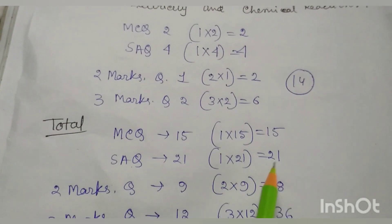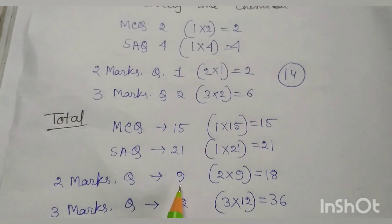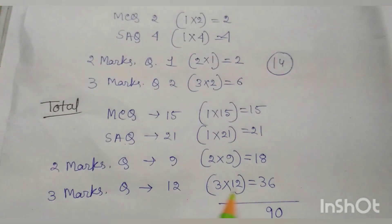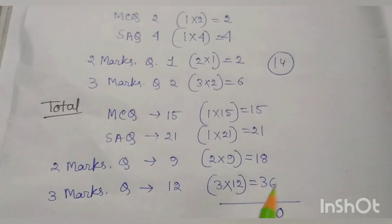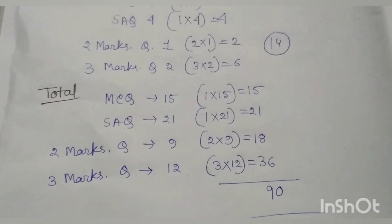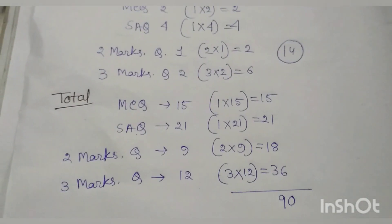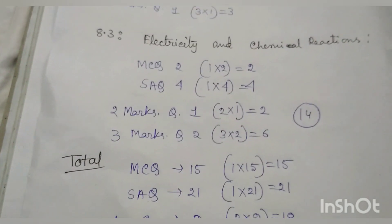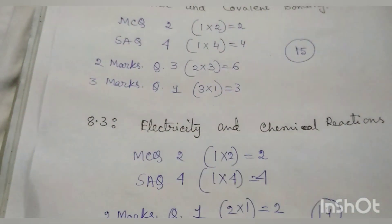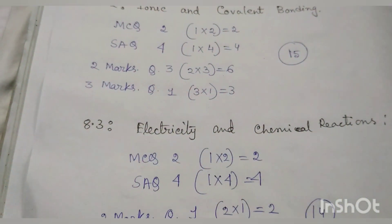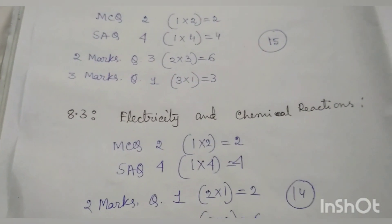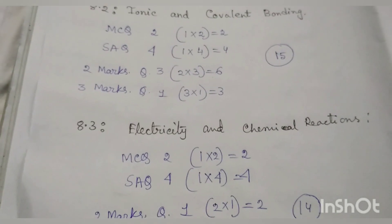2 marks questions: 9 attempts, 2×9 = 18 marks; 3 marks questions: 12 attempts, 3×12 = 36 marks. So total marks: 90 marks written test and 10 marks from project. So I discussed with you Physical Science New and Reduced Syllabus and Number Division. You can get your other subjects' syllabuses and number divisions in the description box. Thank you.